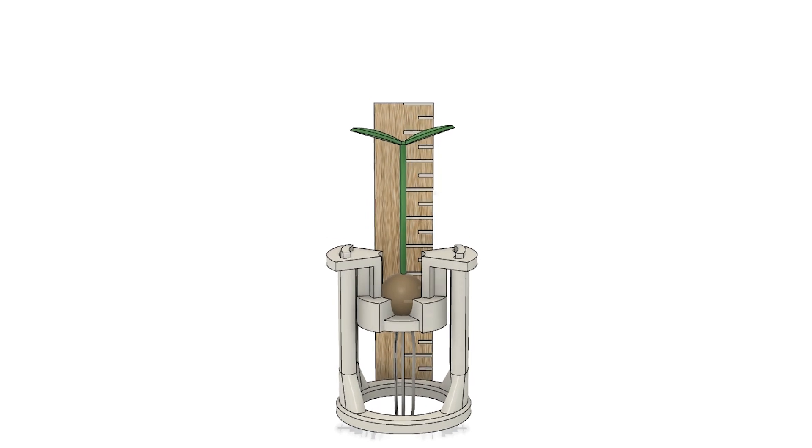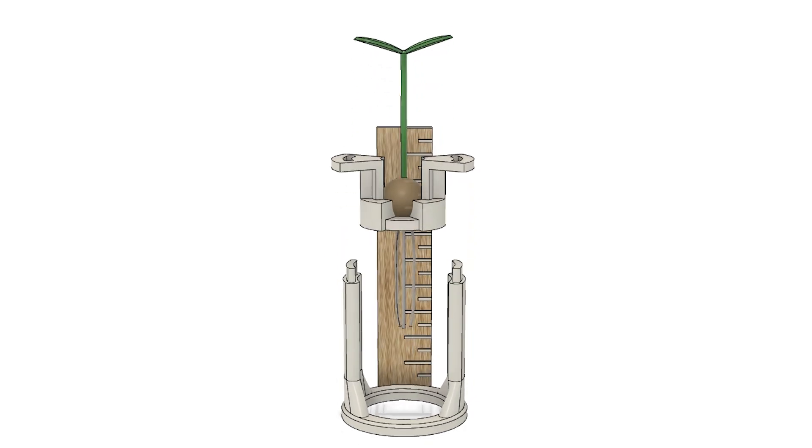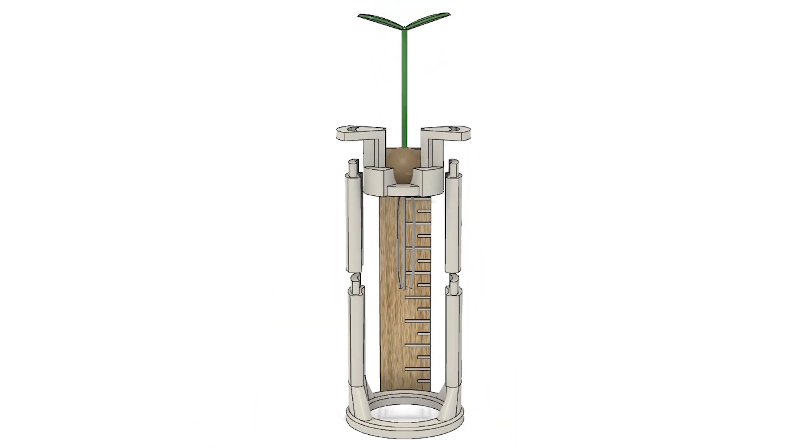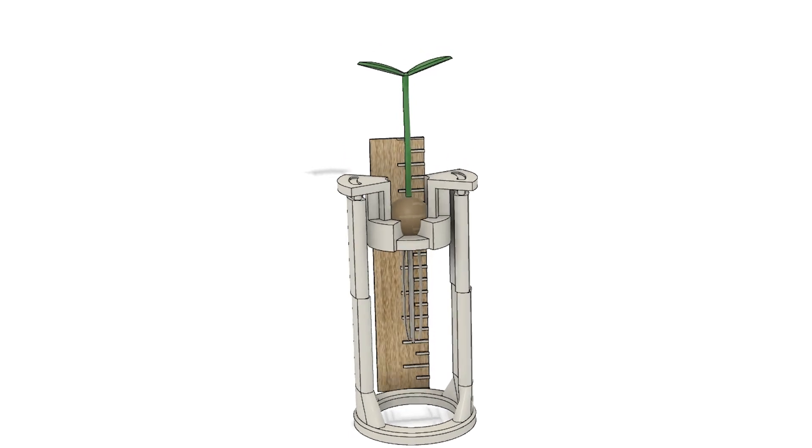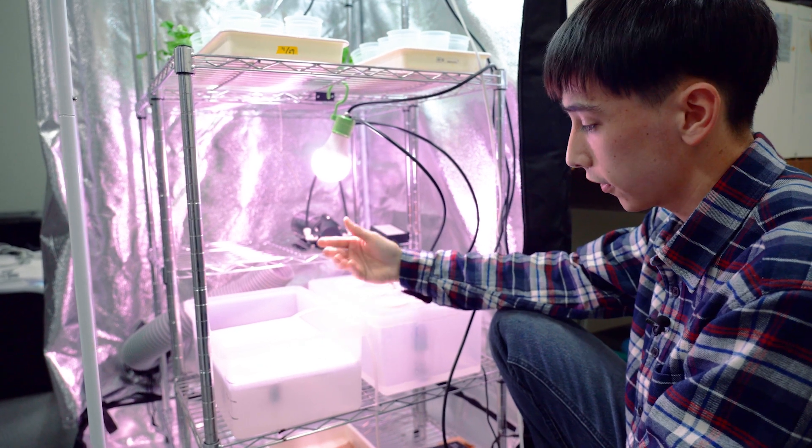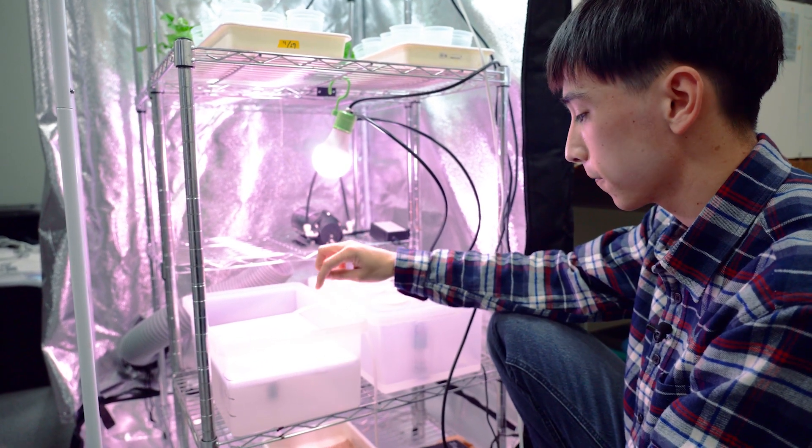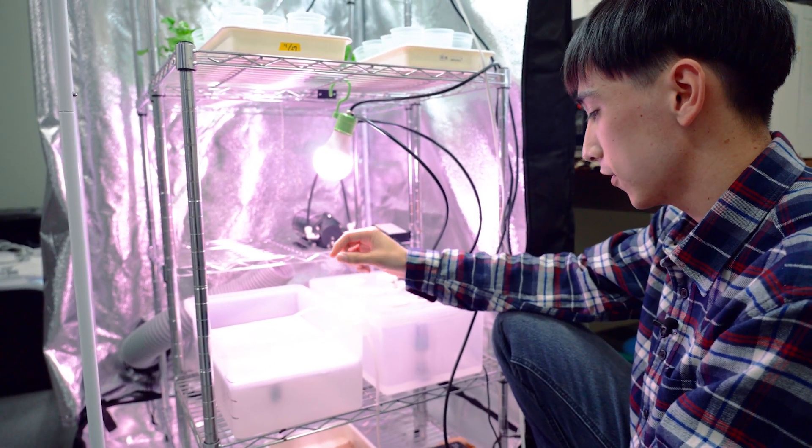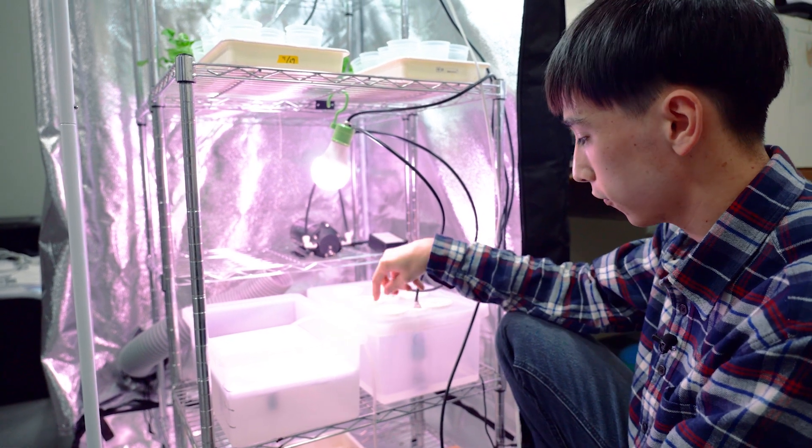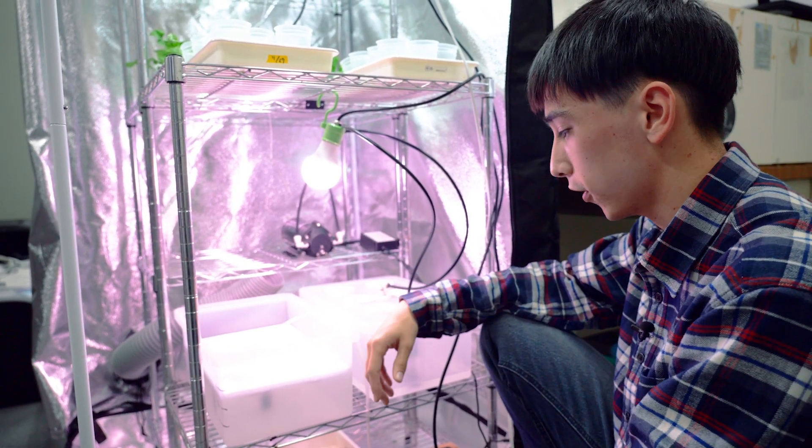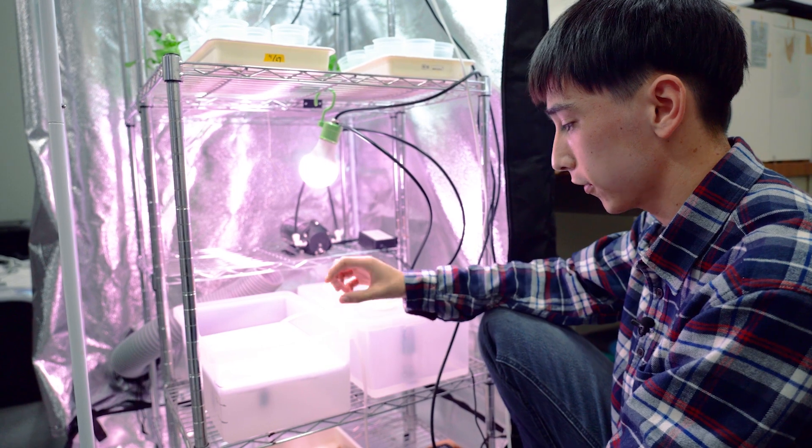The reason why I had to build these things is usually the plants would grow in a sponge called rock wool, and that would impact the way you measure the weight and stem length because you can't really see what's going on. So these are built as a compromise for that problem.